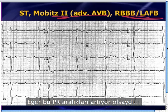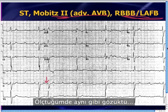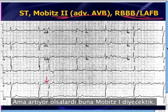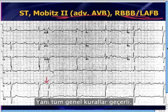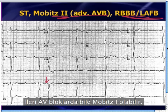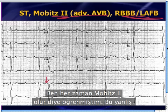There's also bifascicular block. If this PR interval were increasing rather than constant, then you'd call it Mobitz 1. So all the usual rules apply — even with advanced AV blocks, you can have Mobitz 1 or Mobitz 2. I had learned that they are always Mobitz 2, but that's not true.